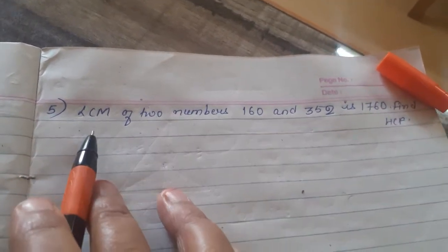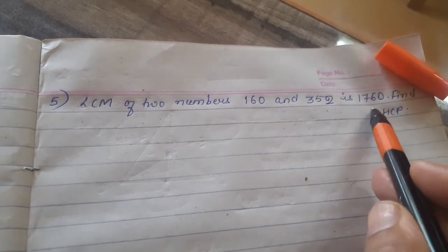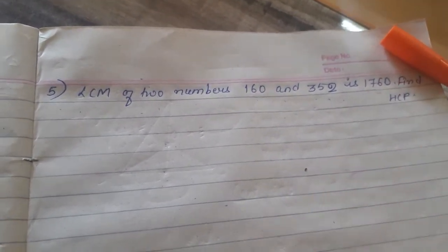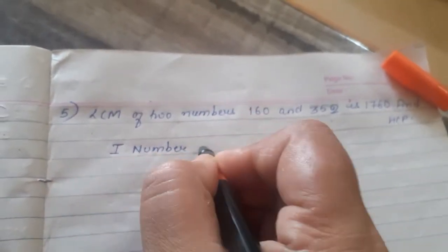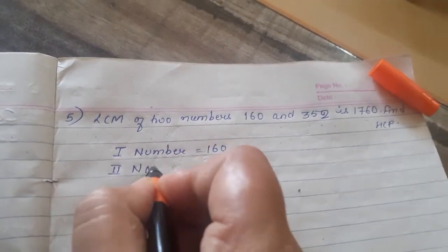Kids, here is another question. LCM of two numbers 160 and 352 is 1760. The two numbers are: first number is 160, second number is 352.